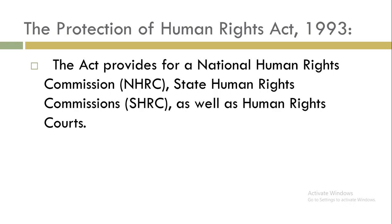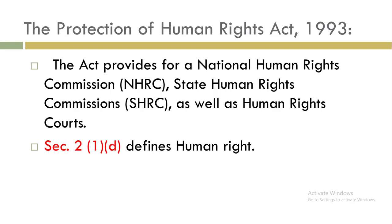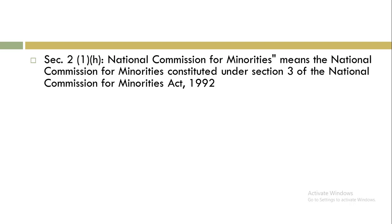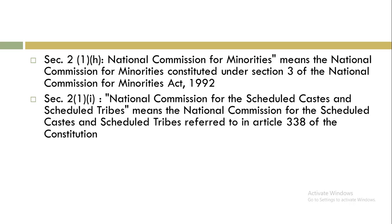In Section 2(1)(D) of this Act, the National Commission for Minorities is defined as the commission constituted under the National Commission for Minorities Act 1992. Similarly, Section 2(1)(I) refers to the National Commission for Scheduled Castes and Scheduled Tribes — this is the same commission mentioned under Article 338 of the Indian Constitution.